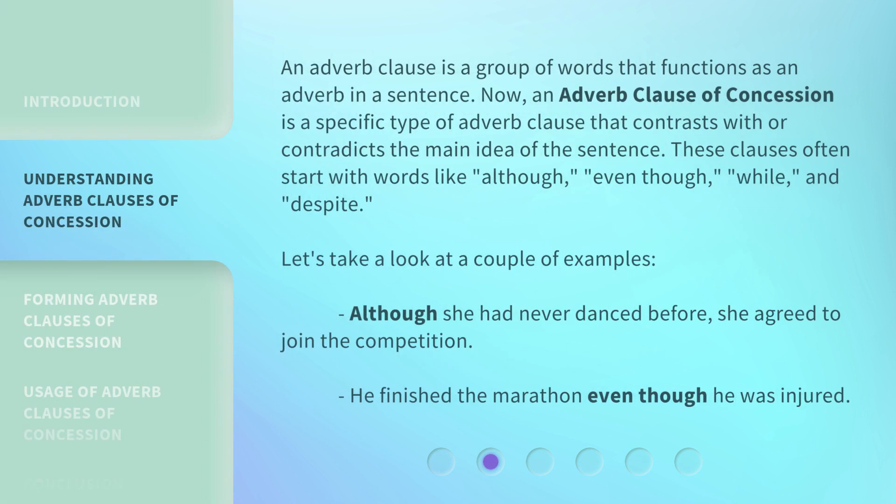An adverb clause is a group of words that functions as an adverb in a sentence. Now, an adverb clause of concession is a specific type of adverb clause that contrasts with or contradicts the main idea of the sentence. These clauses often start with words like: although, even though, while, and despite.